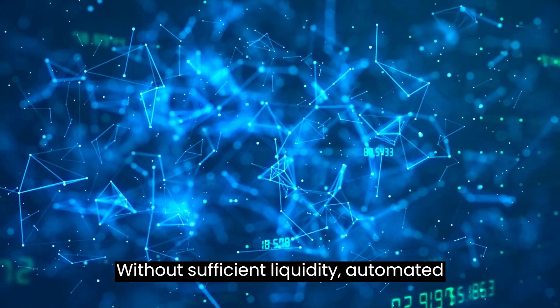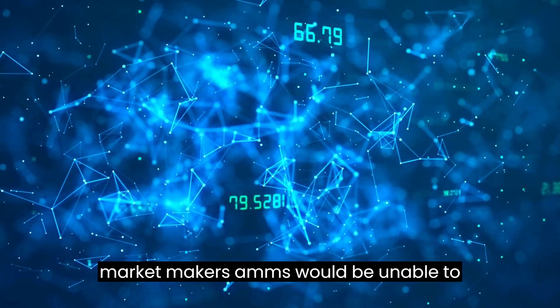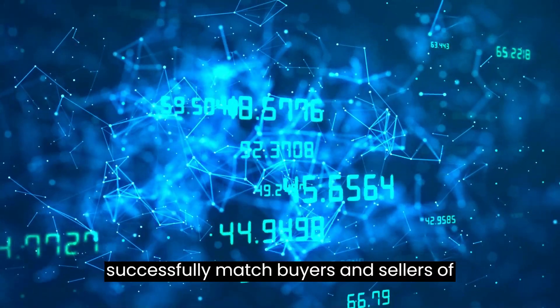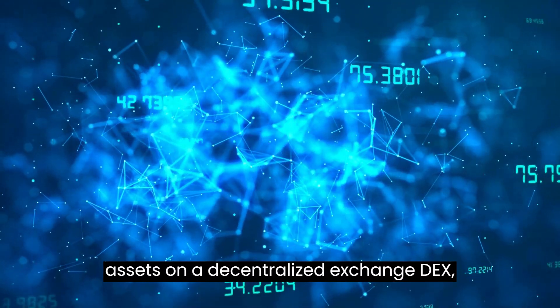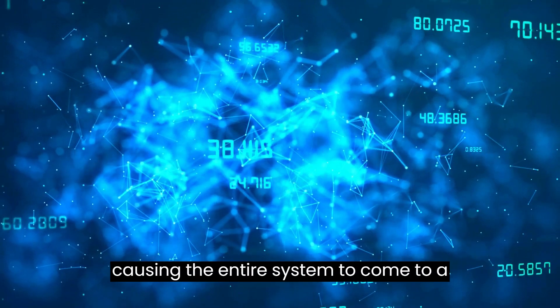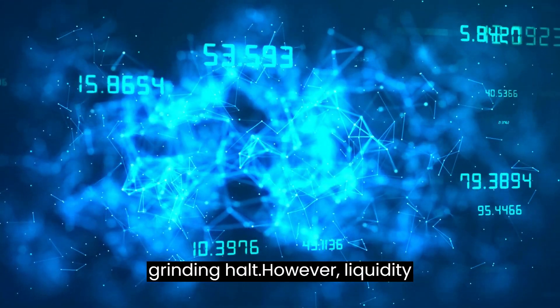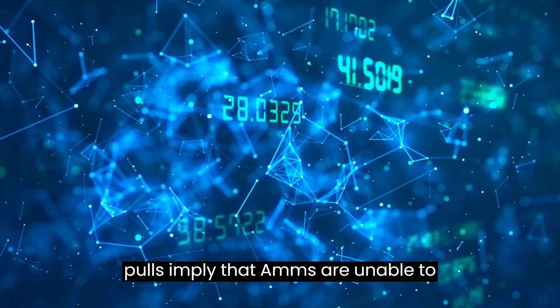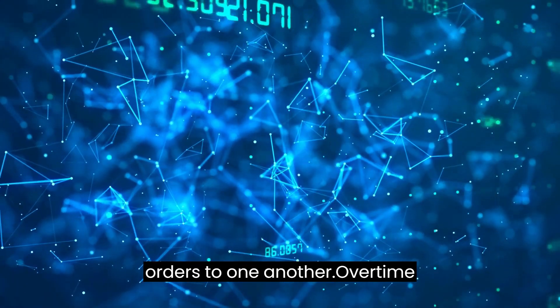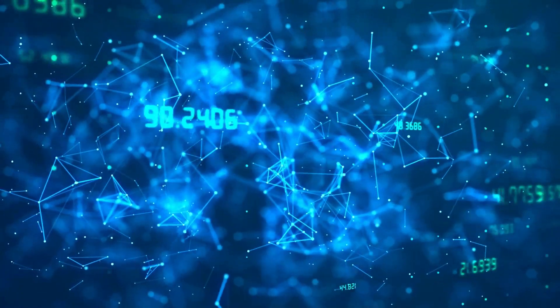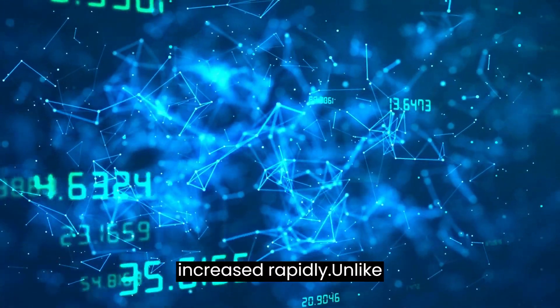Without sufficient liquidity, automated market makers (AMMs) would be unable to successfully match buyers and sellers of assets on a decentralized exchange (DEX), causing the entire system to come to a grinding halt. However, liquidity pools imply that AMMs are unable to provide the liquidity necessary to match orders to one another. Over time, fundraising for liquidity pools has increased rapidly.